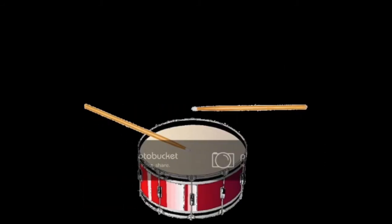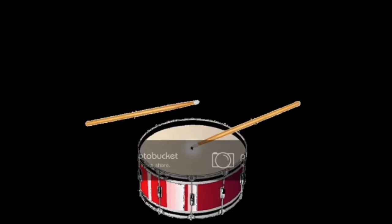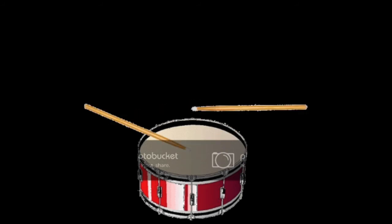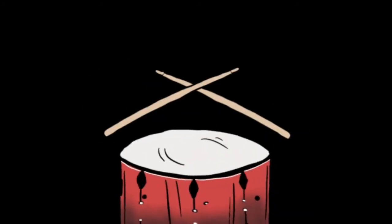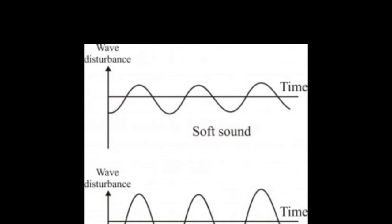Now we are going to study about loud sound. Loud sound is produced when any object vibrates hard, while soft sounds are produced when any object vibrates gently. Like you can see in this picture, soft sound has low waves while louder sounds have higher waves.